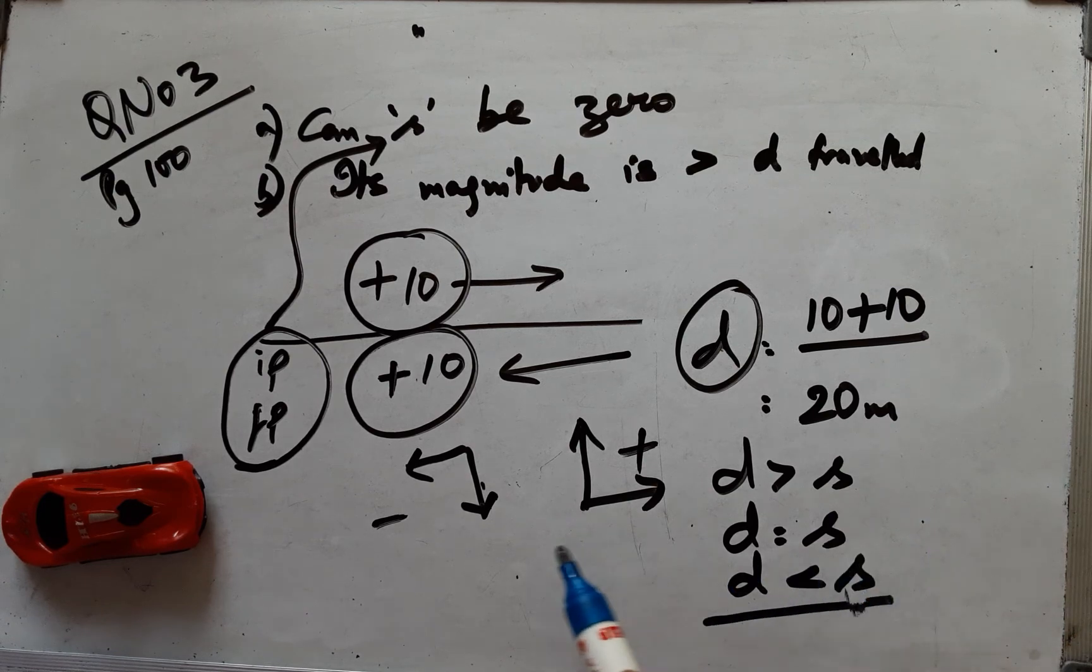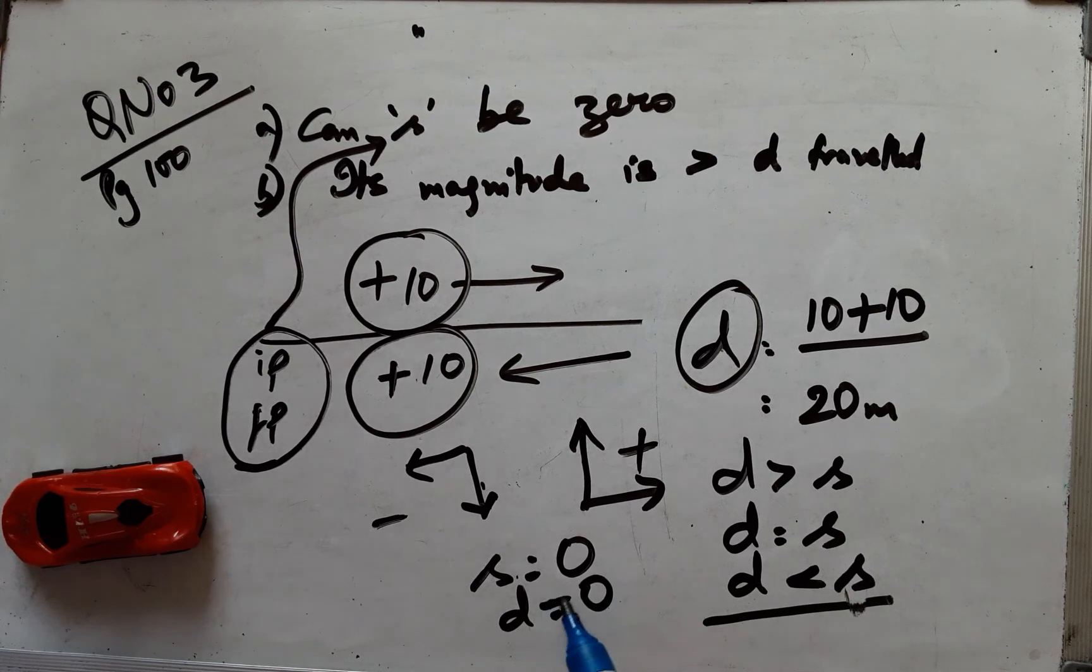Because displacement can be zero, but distance can never be zero. That is the logic and you need to remember this important point.